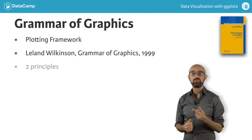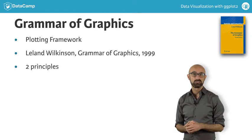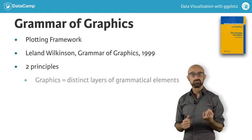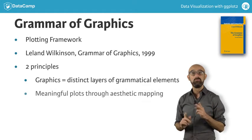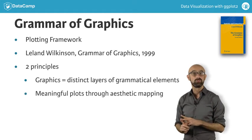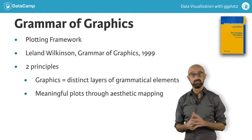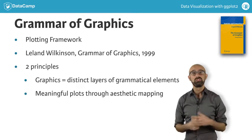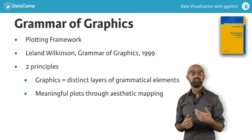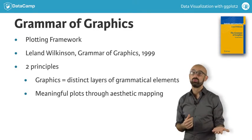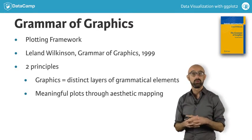There are two key things to note about the grammar of graphics. First, graphics are made up of distinct layers of grammatical elements. And second, meaningful plots are built around appropriate aesthetic mappings. To continue our analogy to written grammar, the layers are like the adjectives and nouns, and the aesthetic mappings are like the grammatical rules for how to assemble that vocabulary.